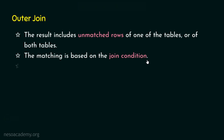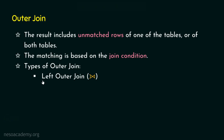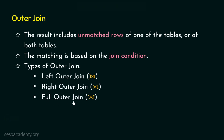Now let's see the types of outer join. There are basically three types: the left outer join, the right outer join, and the full outer join. Just see how the symbol is represented. Left outer join will have some additional marks on the left-hand side, right outer join will have additional marks on the right-hand side, and full outer join on both sides. With this basic knowledge, let's understand all three types of join with a single example.